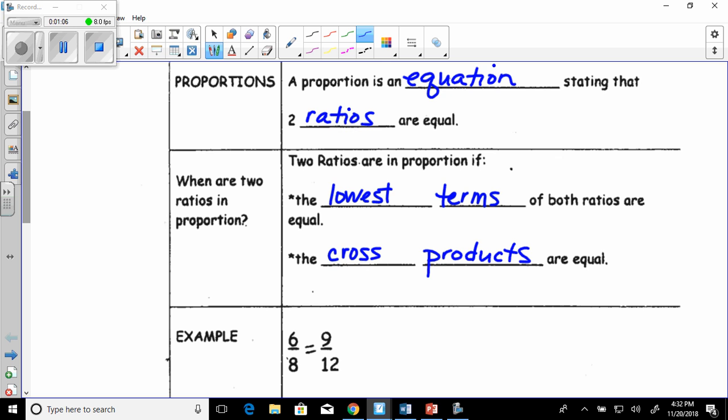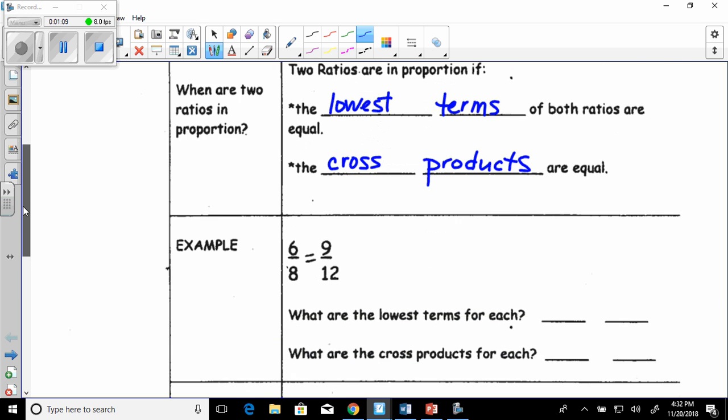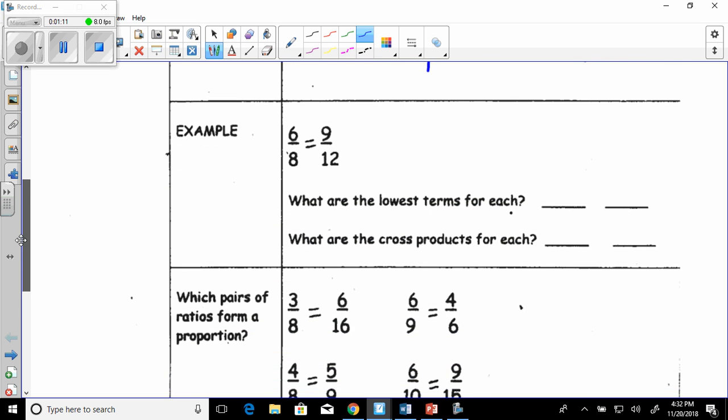And if I'm going too fast just pause the video so you can catch up. So let me show you an example here, 6/8 and 9/12. So we want to see if they are proportional. There's a couple of different ways you can do that. You can take 6/8 and reduce it to lowest terms. So if we divide by 2, what would we get? 3/4. So that is reduced to 3/4.